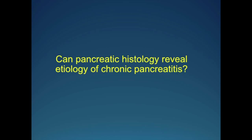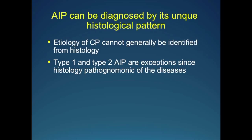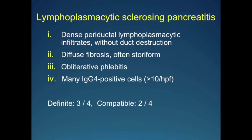Can pancreatic histology reveal the etiology of chronic pancreatitis? Gastroenterology texts from just a decade ago stated you cannot discern the etiology of chronic pancreatitis from histology alone. Well, both type 1 and type 2 are exceptions — histology is pathognomonic of the disease, and you don't need any other feature to make a diagnosis other than histology.